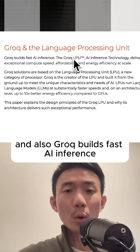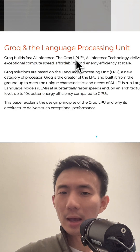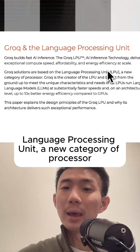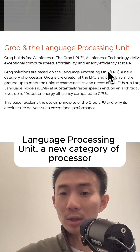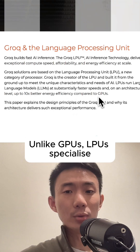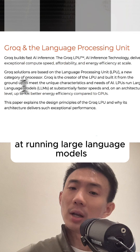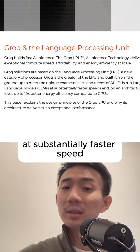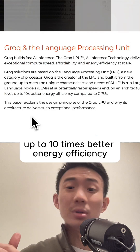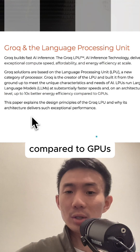Groq self-hosts models like DeepSeek R1 and builds fast AI inference. They even trademarked the term LPU — Language Processing Unit — a new category of processor. Unlike GPUs, LPUs specialize in running large language models at substantially faster speeds, with up to 10 times better energy efficiency on an architectural level.